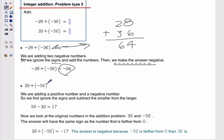Now in the next example, 39 plus negative 56, well that's a little bit different.